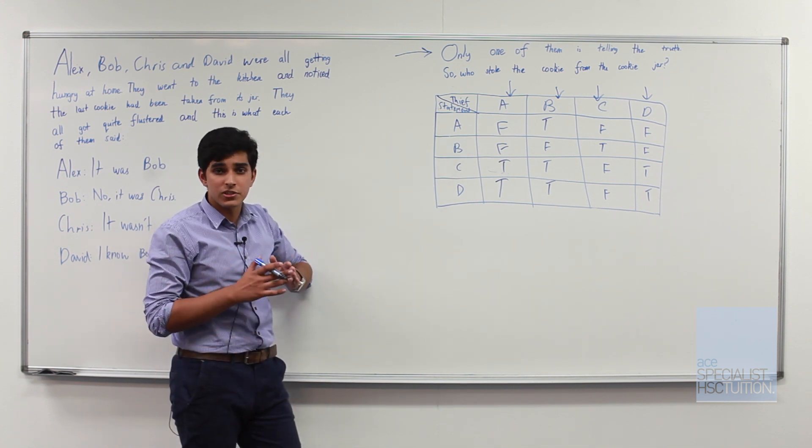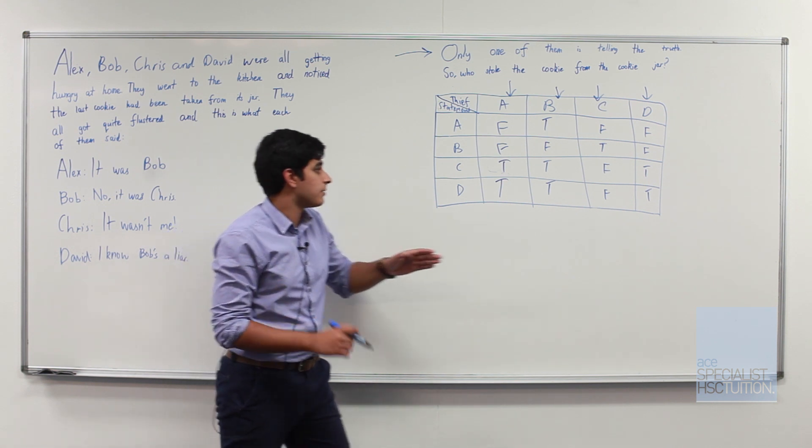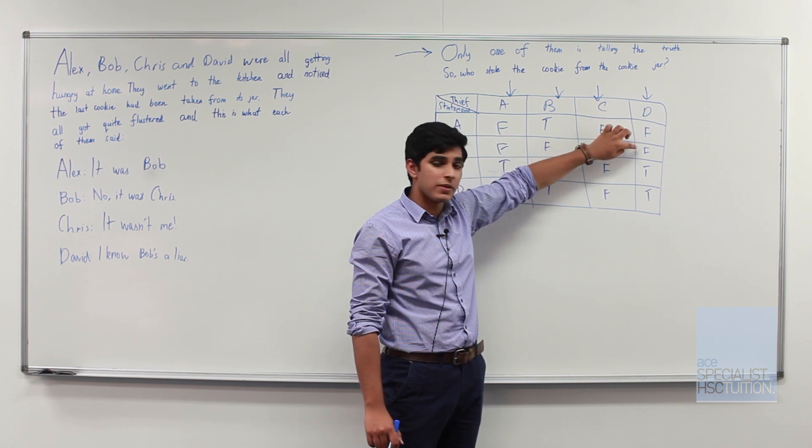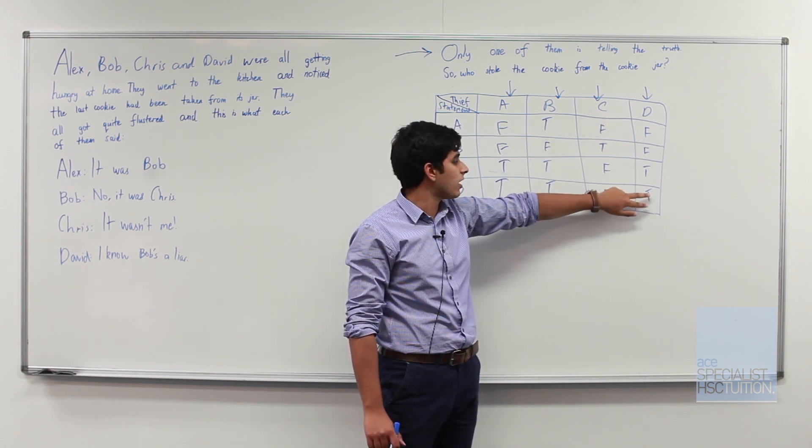But just to be absolutely sure we'll check D. Clearly in the world where D has stolen the cookie we have two people telling a lie and two people telling the truth.